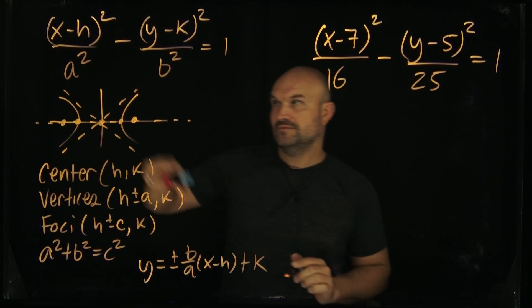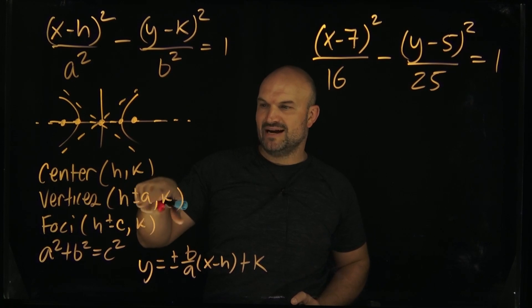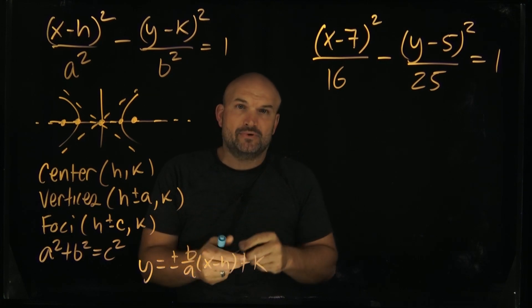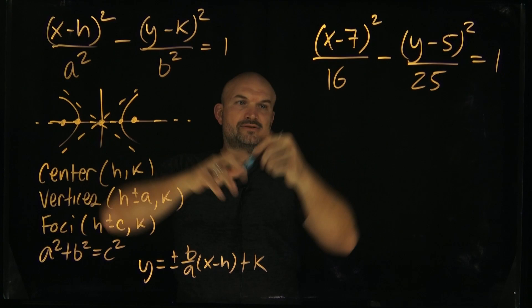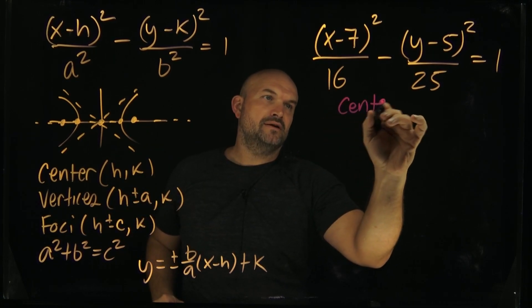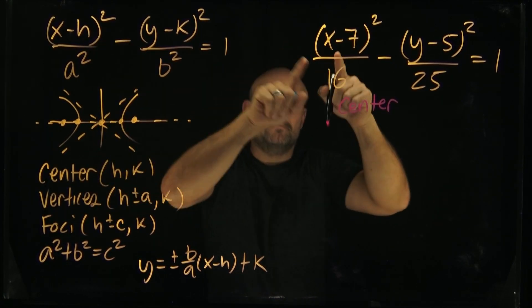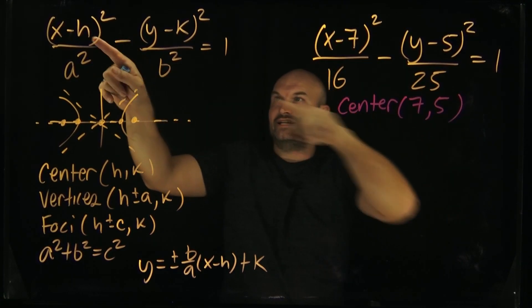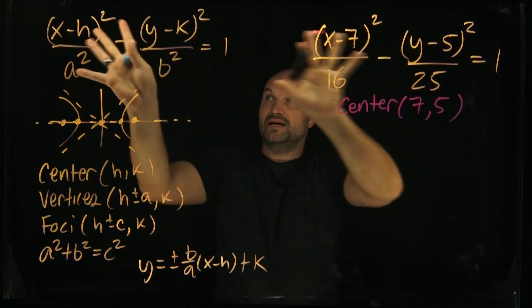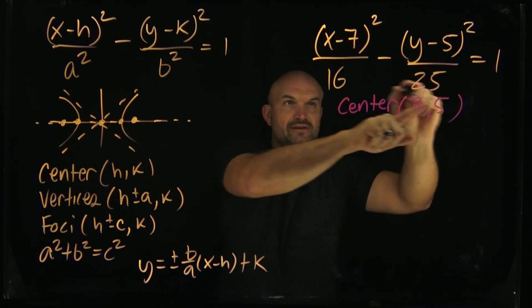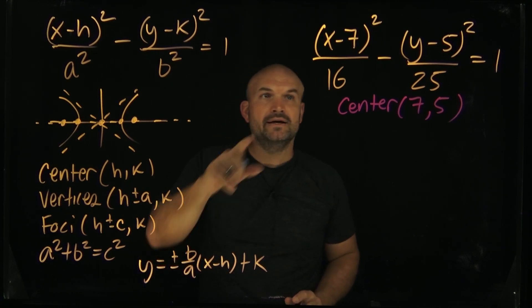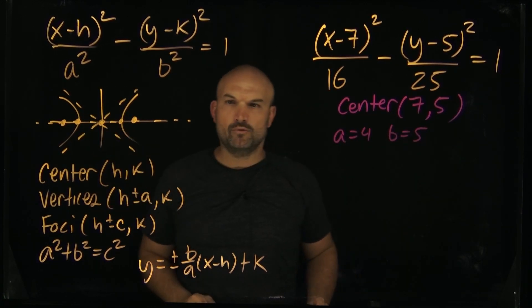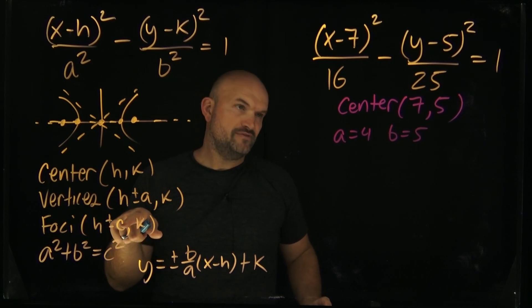We have our center h, k, labeled right there. Our vertices are going to be h plus or minus a comma k, because we're going horizontal. So what is our a? That's the next step we're going to want to do. Here, we can identify the center. That's kind of easy. Center is, remember, it's x minus h, so x minus 7. That means my center here is 7 comma 5. Don't do negative 7, negative 5. No, it's h and k is right there. 7 and 5 is right there. That's the formula, x minus h, y minus k. So 7, 5 is going to be your center. My a is just going to be, if a squared is equal to 16, then my a is equal to 4. My b is equal to 5. And they say, well, what about your c?